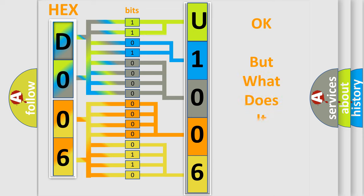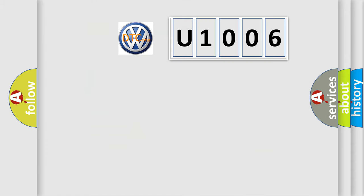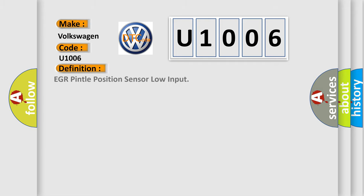The number itself does not make sense to us if we cannot assign information about what it actually expresses. So, what does the diagnostic trouble code U1006 interpret specifically for Volkswagen car manufacturers?